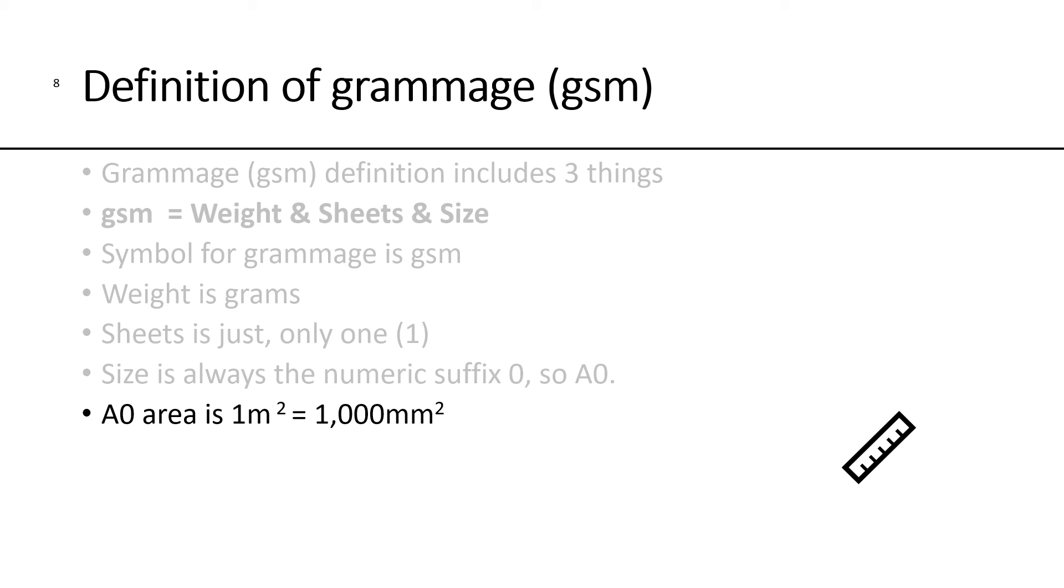We know the A0 area is 1 meter squared, which is the same thing as 1,000 millimeters squared. The actual physical dimension or size of an A0 sheet is 841 millimeters by 1,189 millimeters. And if you calculate the area, it's almost exactly 1,000 millimeters squared, which would be one meter squared. There's a little bit of rounding error there. And if you wanted to convert the A0 into inches, it would be 33.1 inches by 46.8 inches with an area of 1,549 square inches.